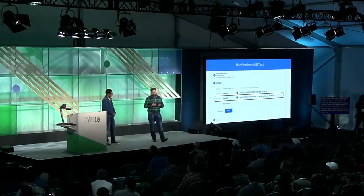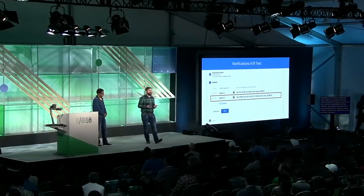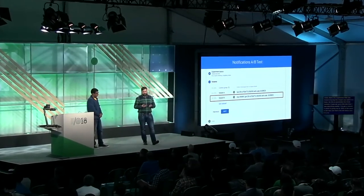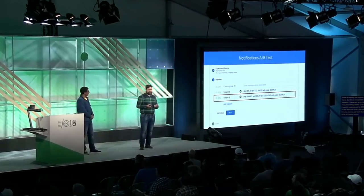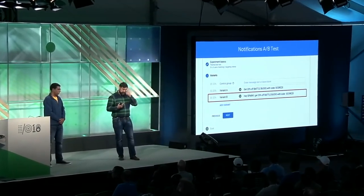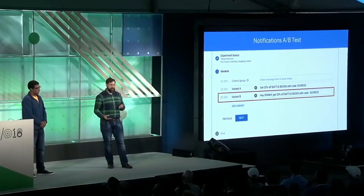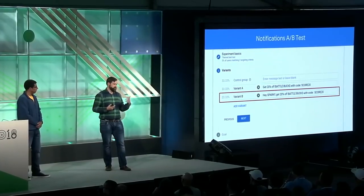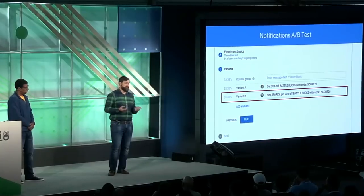These are the three variants set up in this test. Variant A goes out to 33% of users in the test — that's the old status quo, a boring message that says 'Get 20% off BattleBucks.' Then I've got variant B, the new version, which says 'Hey Sparky, get 20% off BattleBucks with this code,' appealing to team spirit and affinity for their team. Both of these are compared against the control group, which is no message at all. At the end of the experiment, all deltas in our metrics — user engagement — will be measured relative to not receiving a message.